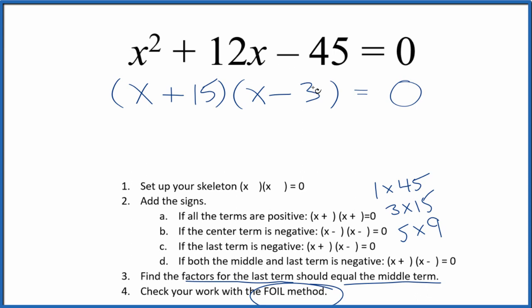First, outside, inside, and last. That gives us, and you can see we have the negative 3x and the 15x. When we add these together, negative 3x and 15x, we get 12x. We also have our negative 45 and our x squared.